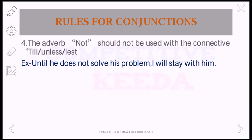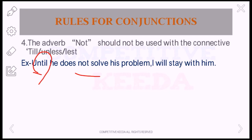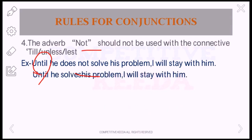Rule number four: the adverb 'not' should not be used with the connectives 'till,' 'unless,' 'lest,' and 'until.' For example, 'Until he does not solve this problem, I will stay with him' — we cannot use 'not' with 'until.' We should convert it to a form without 'not.' So the correct answer is: 'Until he solves this problem, I will stay with him.'